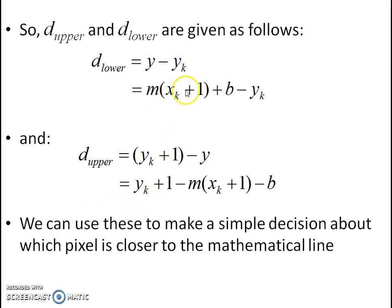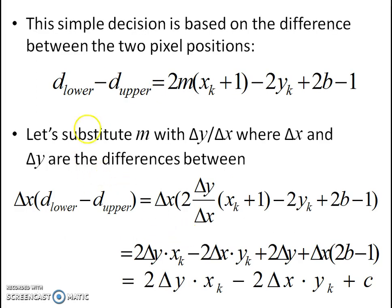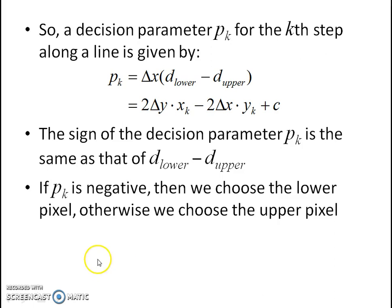We substitute the line equation in place of y to calculate which pixel is closer to the mathematical line by computing d_lower minus d_upper. This helps calculate the value of m, where m equals Δy over Δx. By calculating Δx times (d_lower minus d_upper), we derive the mathematical equation. Our decision parameter pk for the kth step is defined as pk = Δx(d_lower minus d_upper).